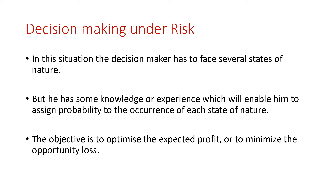In this situation, we have confusion, risk factor, and probability. The decision maker has some knowledge or experience which will enable him to assign the probability to the occurrence of each state of nature. If you have a little idea on what will happen, what can happen — this is the decision making under risk.